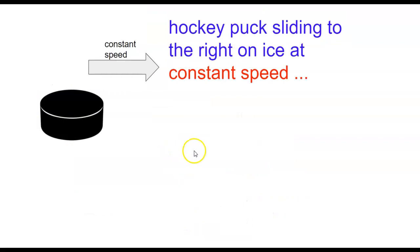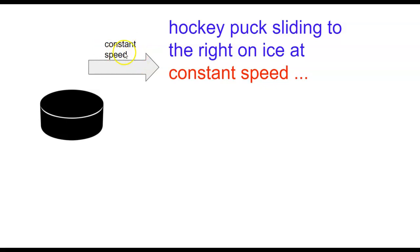Let's look at a tricky situation: a hockey puck sliding to the right on the ice at constant speed. This type of arrow is not a force — it's an action indicator, or what I like to call a motion contract. We need to have a motion contract in order to be able to put the forces in. We need to know what the puck is doing before we can put the forces in.